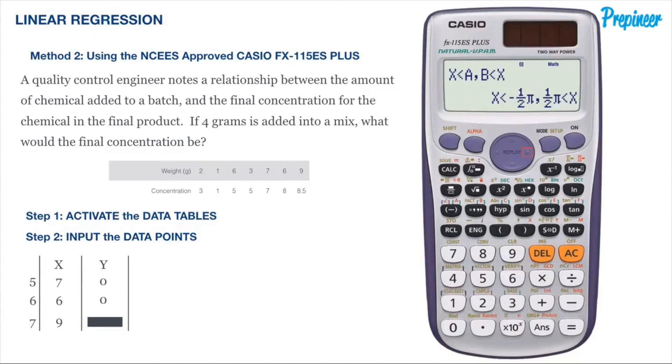Once all your data points are input into the X column, hit that right button to switch over to the Y column. Because you're on the seventh data line, you will need to press the down scroll arrow once, and that will take you all the way up to the first row of the Y column. Input all of the values just as we did with the X values, and once you're complete hit the AC button.